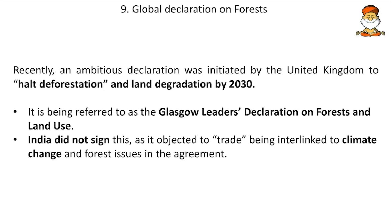Next, the Global Declaration on Forests. An ambitious declaration initiated by the UK aims to halt deforestation and land degradation by 2030, referred to as the Glasgow Leaders' Declaration on Forests and Land Use. India did not sign this, as it objected to trade being interlinked with climate change and forest issues in the agreement.